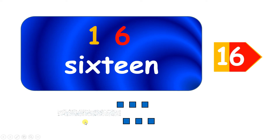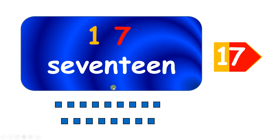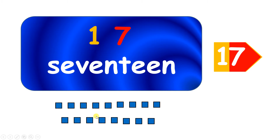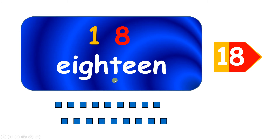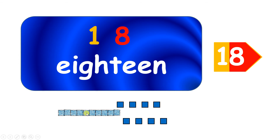Sixteen — one ten and six left over. Seventeen — and I expect you can tell me why we write the number seventeen with a one and then a seven. That's because we can make one line of ten and then seven left over.